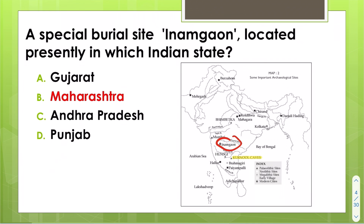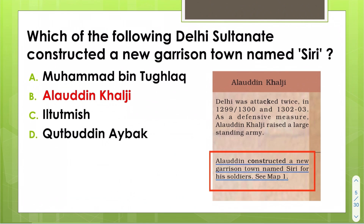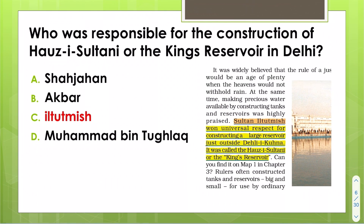Inamgao is present in Maharashtra. Which of the following Delhi Sultanate rulers constructed a new garrison town named Siri? This was taken from seventh NCERT — Alauddin Khalji constructed a new garrison town named Siri. The king responsible for the construction of Hauz-i-Sultani, the king's reservoir,